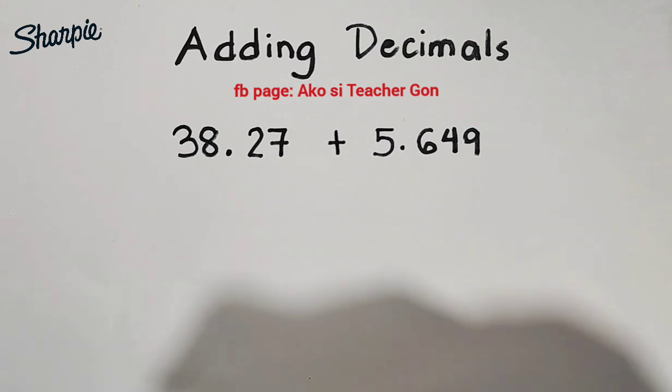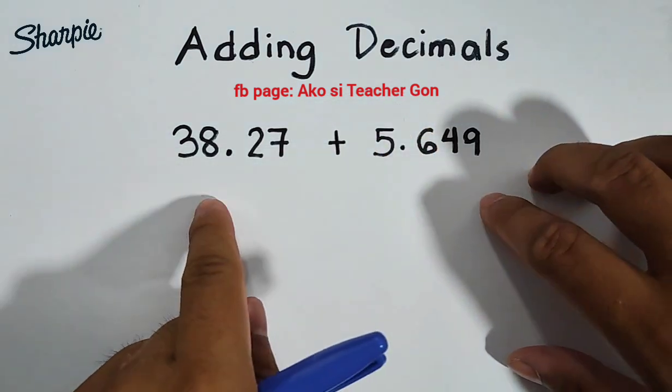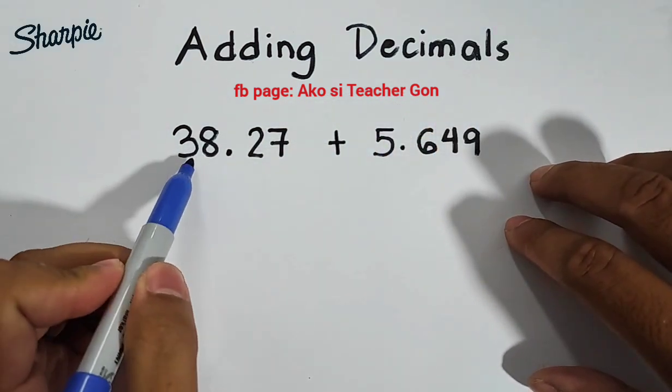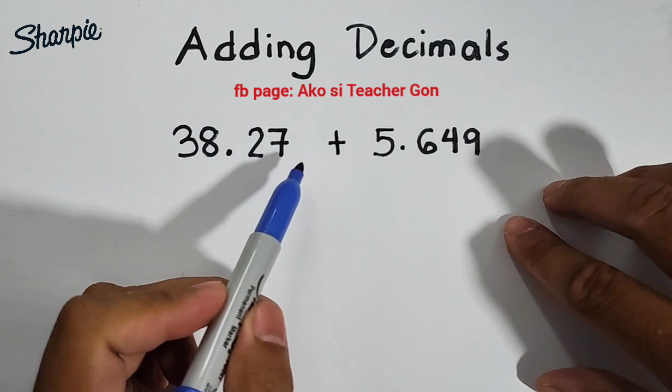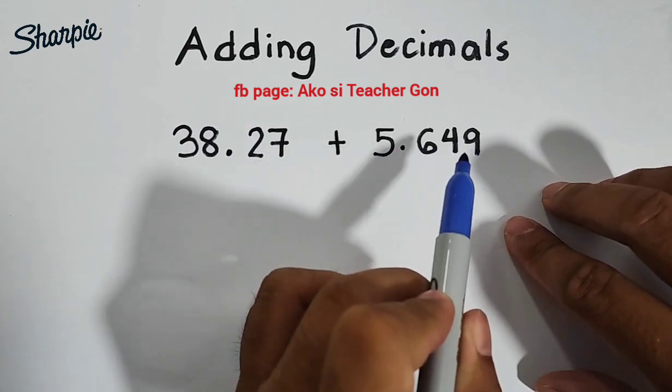So without further ado, let's do this topic. We have here adding decimals and this is our first example. We are given 38.27 plus 5.649.